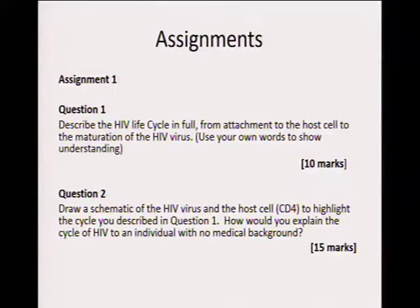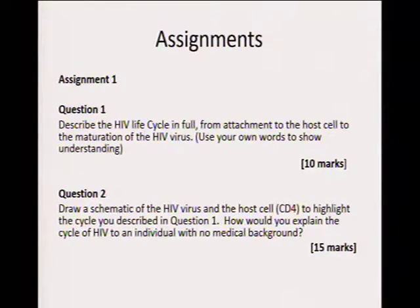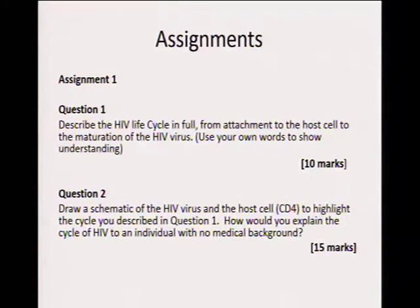Let's look at assignments. You are required to do assignments, and assignment one has two parts. First, describe the HIV cycle in full from the attachment to the cell through to the maturation of the virus. Use your own ways to show your understanding, and that assignment carries 10 marks. The way HIV interacts with the CD4 cell is very, very fundamental, and that's what helps us as managers of HIV understand in broad detail what damage HIV does once it enters the body.